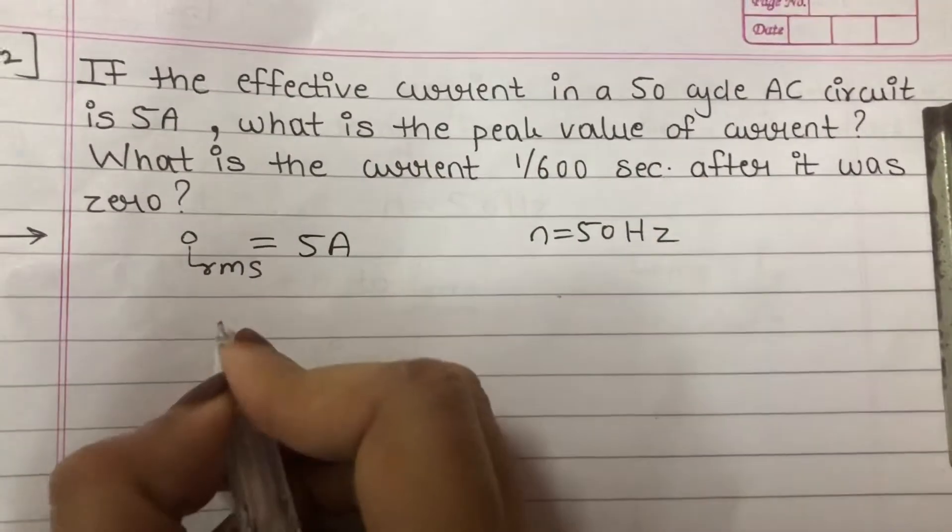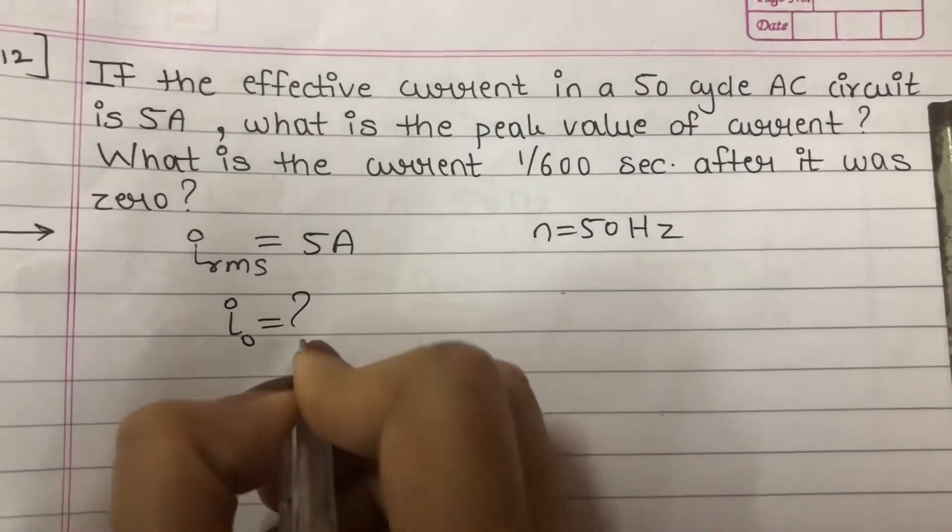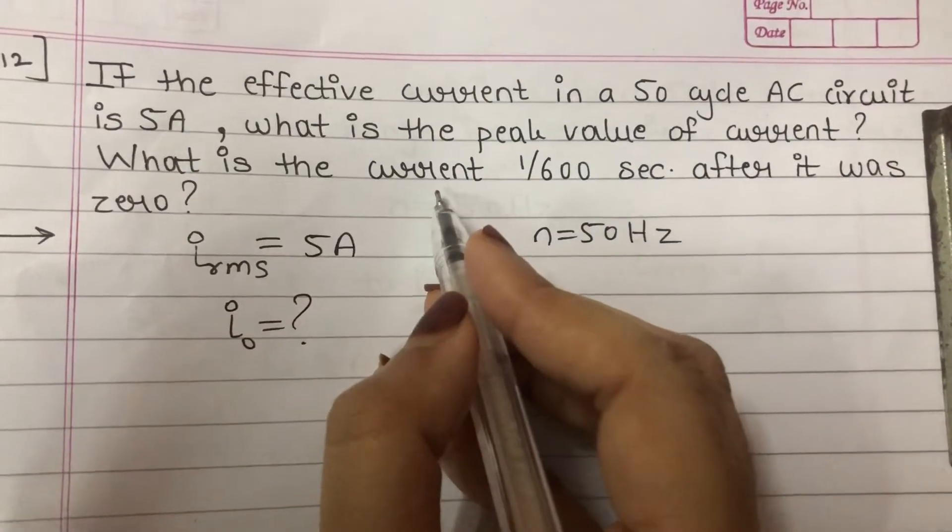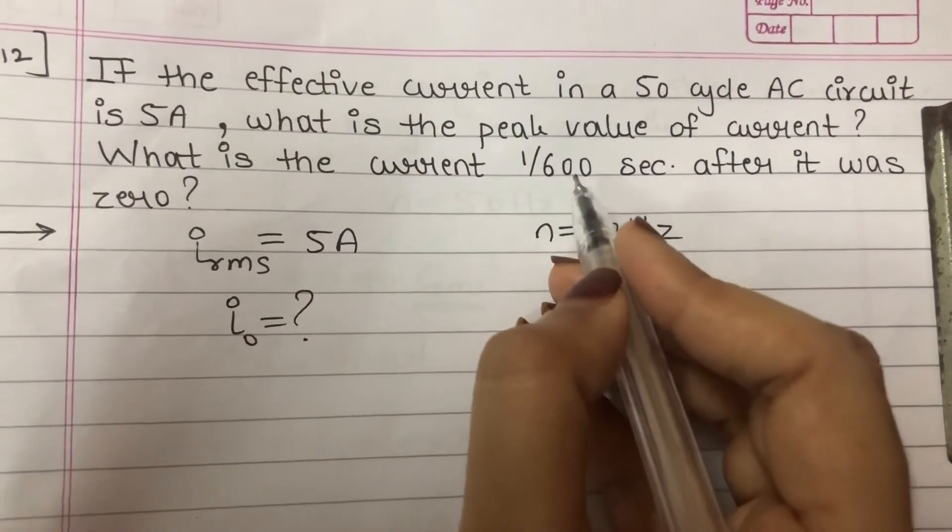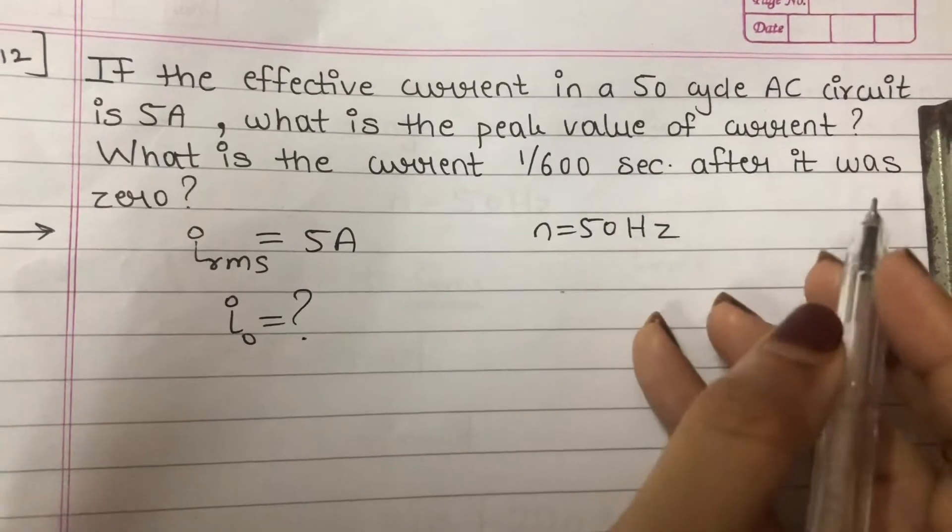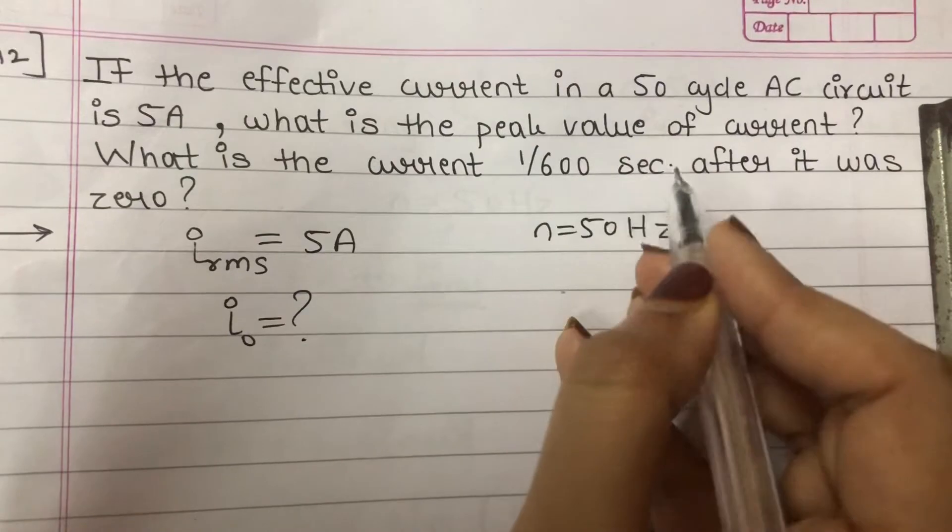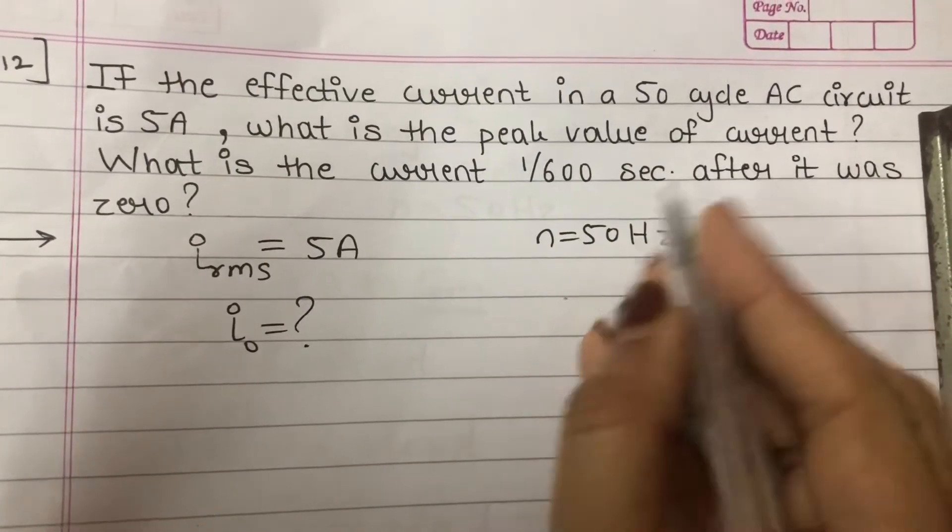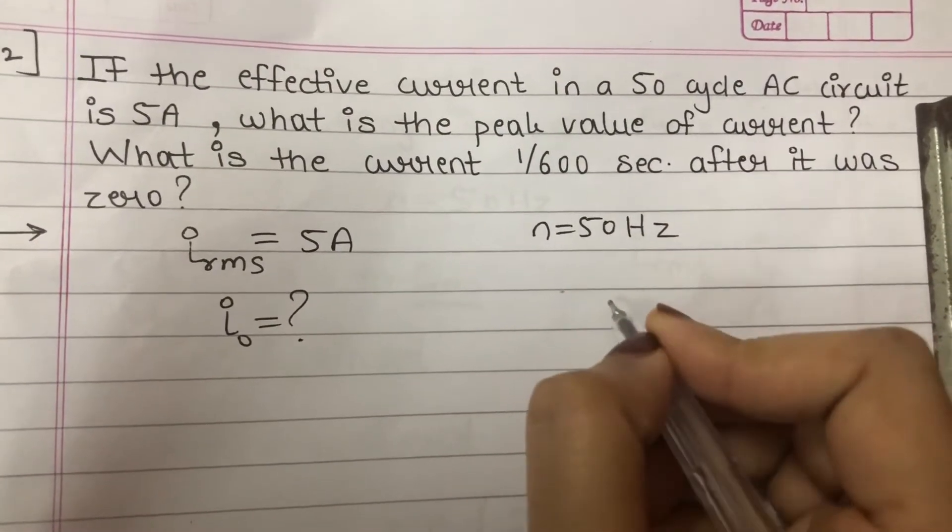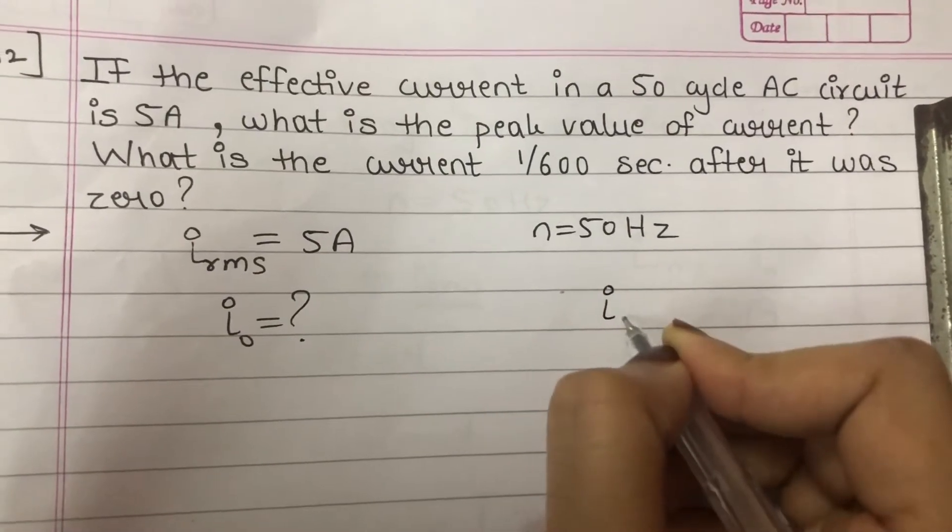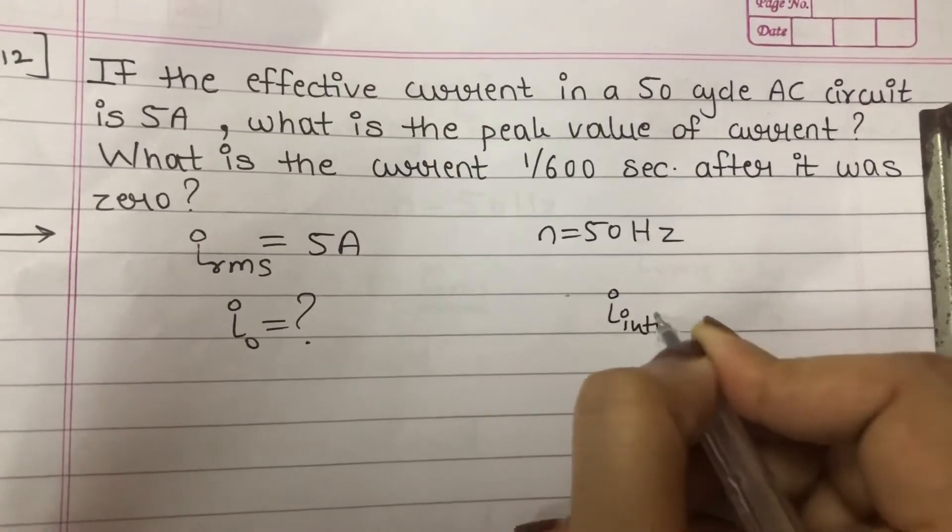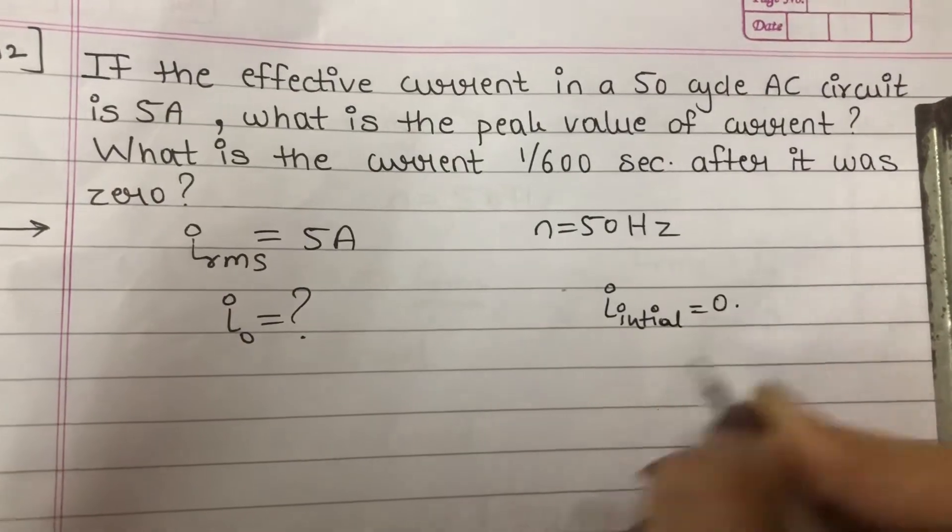What is the peak value of the current? That is I₀ is asked. What is the current 1 upon 600 seconds after it was zero? After 1 upon 600 seconds, that means initially it was 0. Okay, initially the current was, initially current was 0.